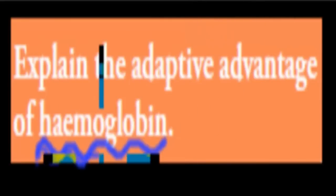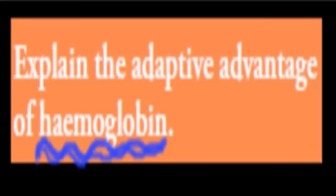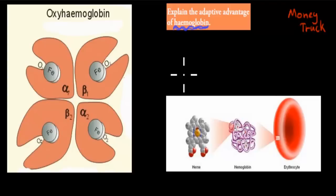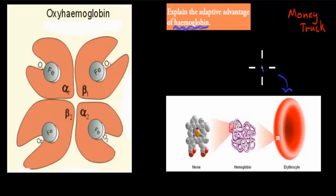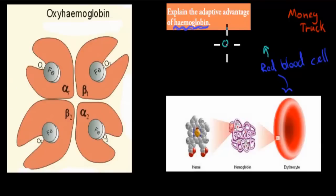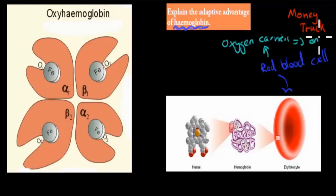What's inside red blood cells? Hemoglobin. Before we start talking more about the dot point, I'll explain what hemoglobin actually is. Here we have a red blood cell, and we have millions of these red blood cells in our body. Their only function is to carry oxygen — red blood cells are oxygen carriers, and that is their only function. Inside red blood cells, we have something called hemoglobin.